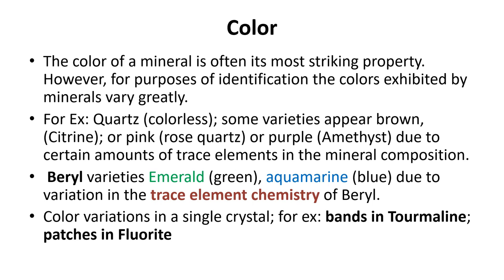If we take beryl, there are two varieties: green and blue. If beryl exists in a green variety it is known as emerald, and if the color is blue it is known as aquamarine. These are due to variation in the trace element chemistry of beryl. Color variations may also occur within a single crystal — for example, bands may appear in tourmaline or patches in fluorite.